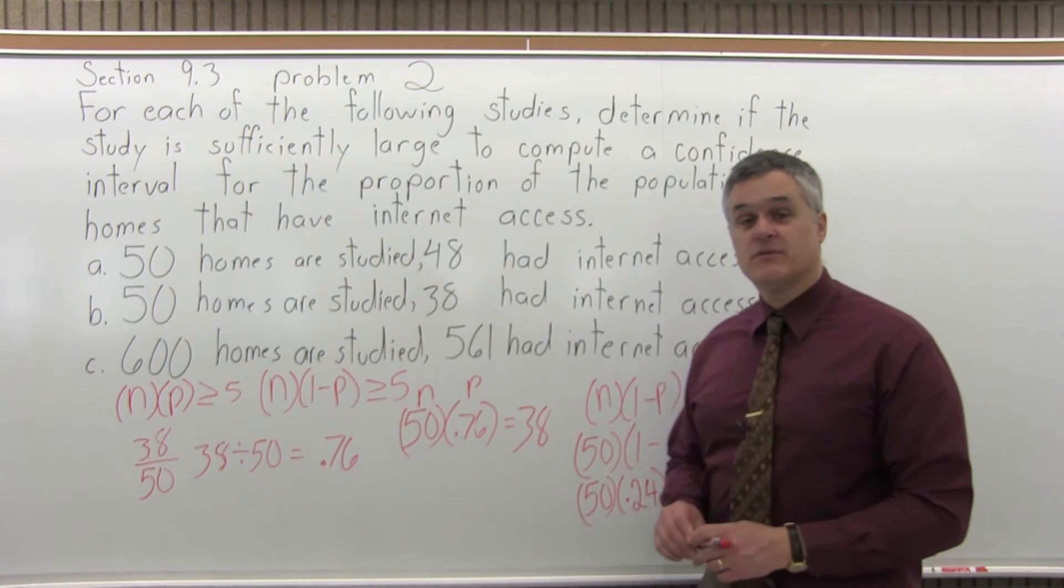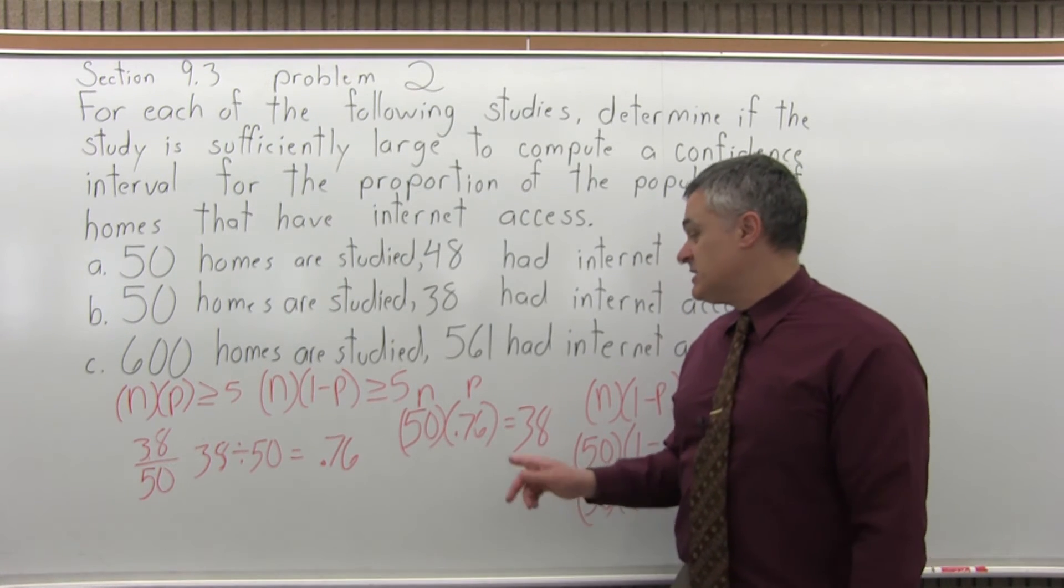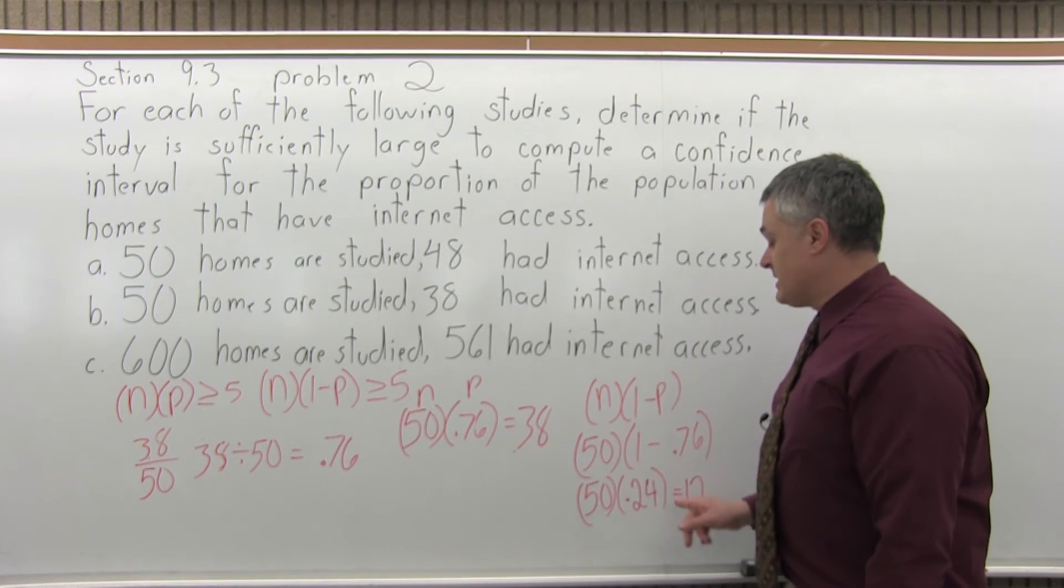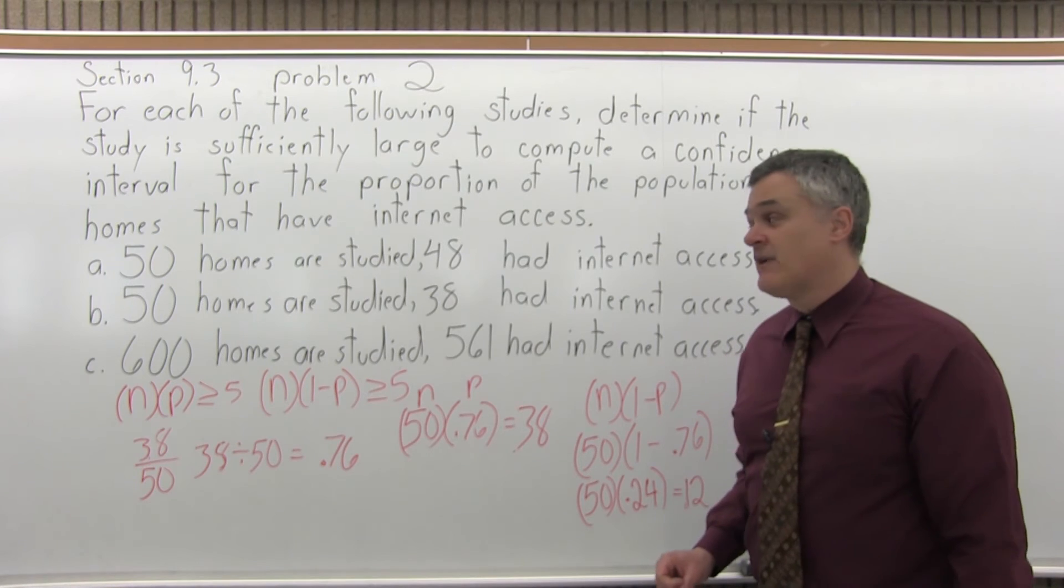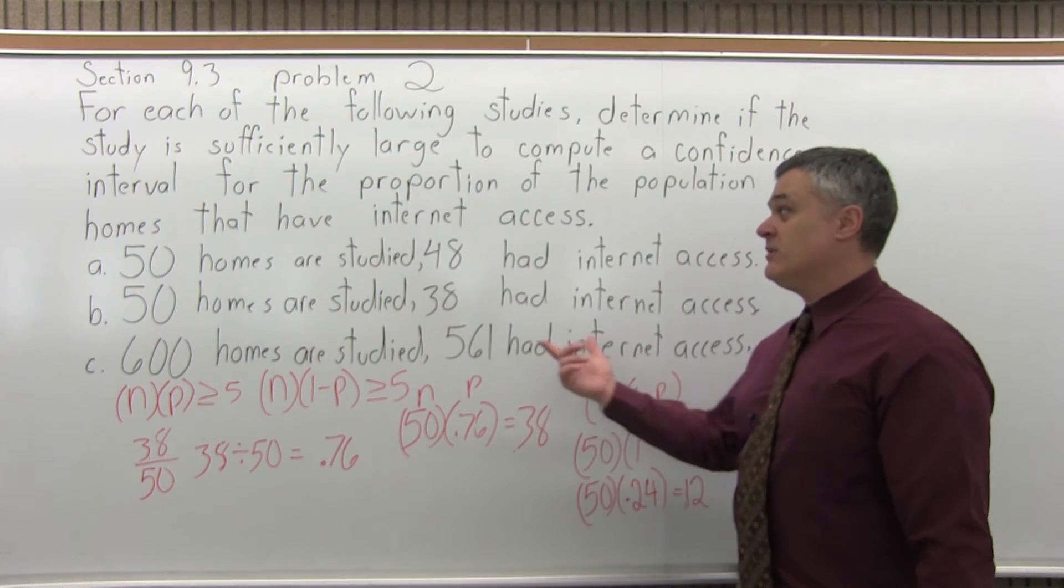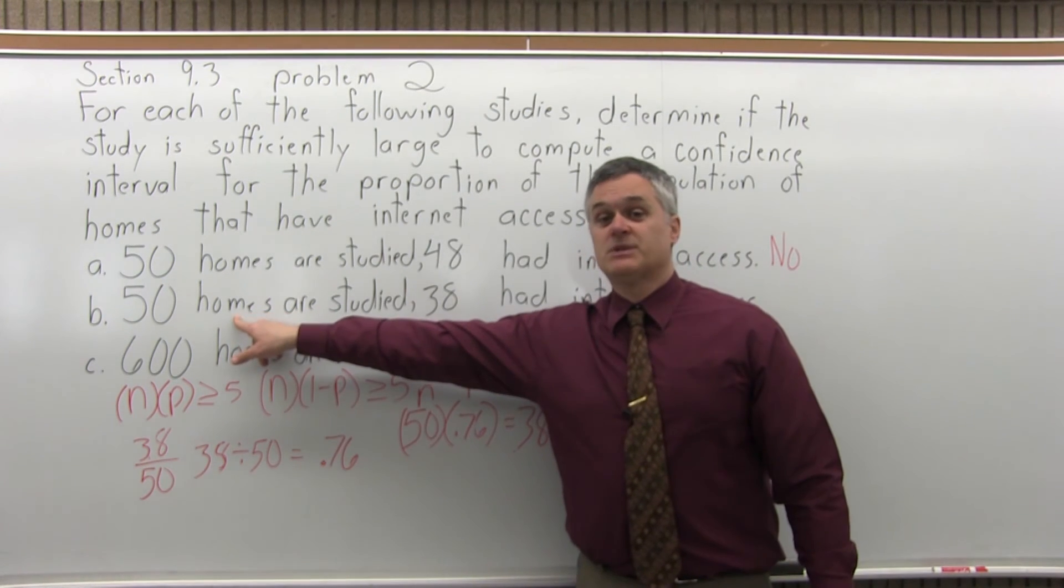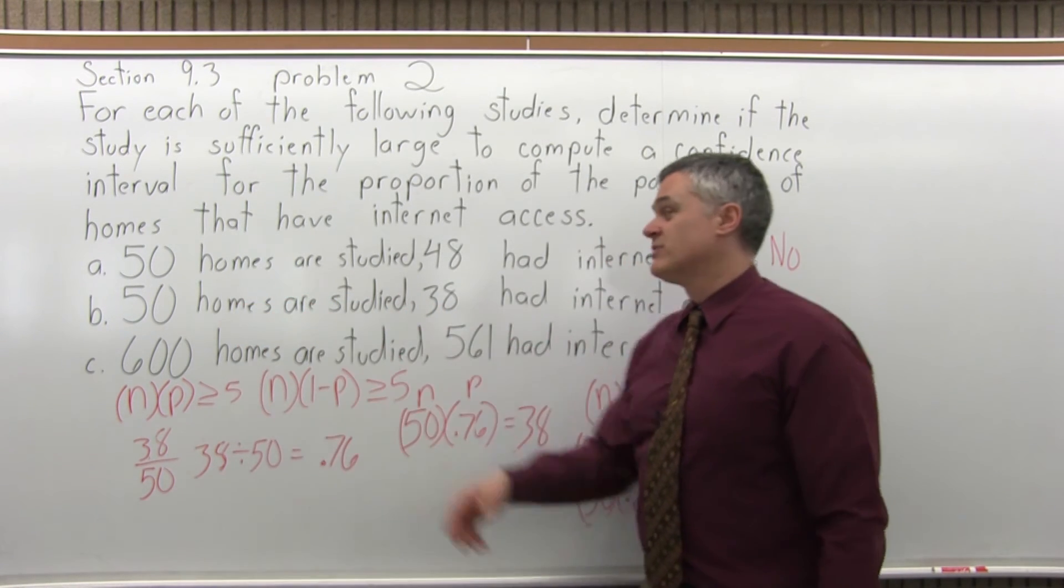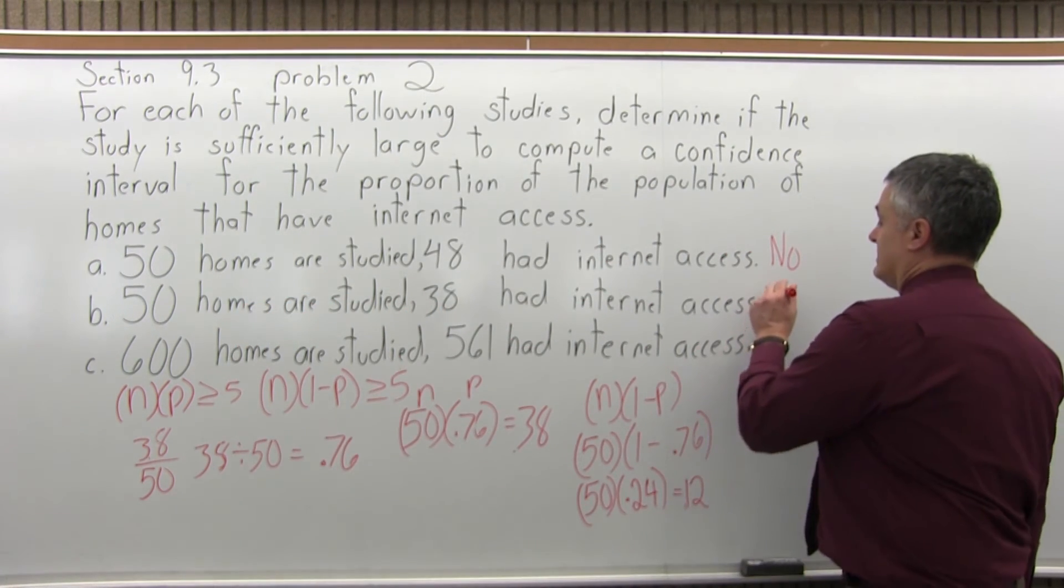That's at least 5. So, n times p is big enough. It's 38, which is at least 5. N times 1 minus p comes out to 12, which is bigger than 5. So, for part b, which really has the same number of homes studied, it's the ratio of successes to the sample size, really. Yes, it is big enough.